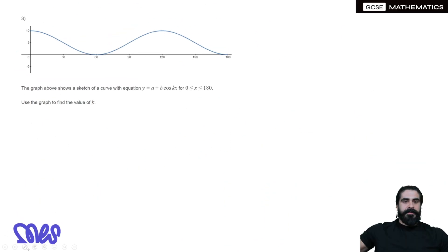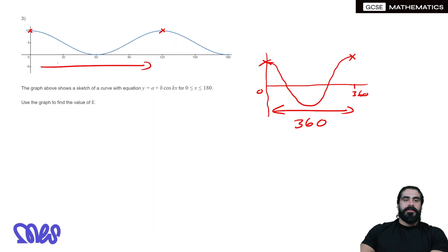The graph above shows a sketch of the curve with equation y = a + b cos(kx), x is between 0 and 180. Use the graph to find the value of k. We think about the original cosine graph. The original cosine graph goes from 0 to 360, so from peak to peak it's 360 degrees in width. Here, if you look at peak to peak, it goes from 0 to 120.